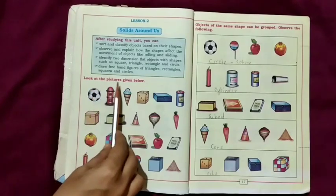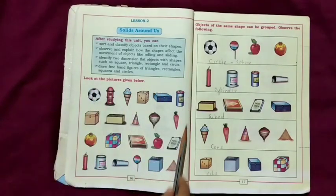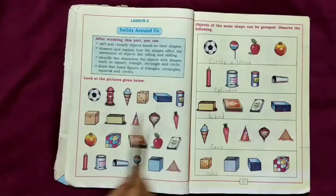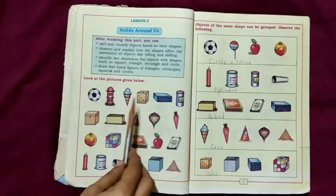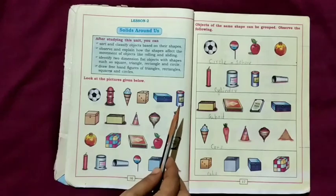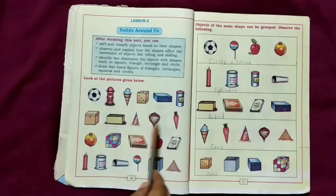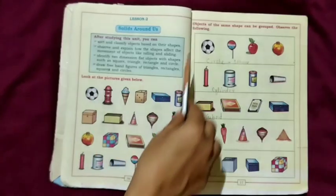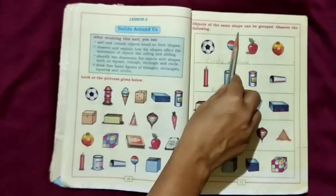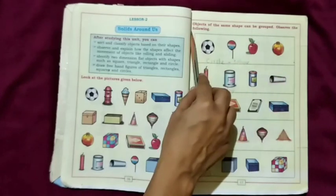Look at the pictures given below. See here, so many solid objects are there: ball, cone, dice, box, carrot, apple, pomegranate. So many objects are there. Objects of the same shape can be grouped. Observe the following.